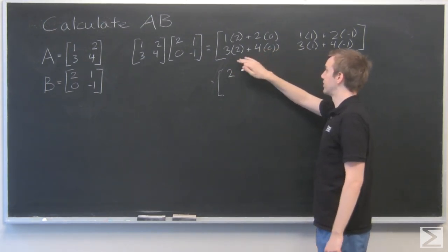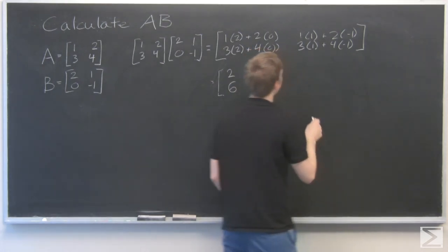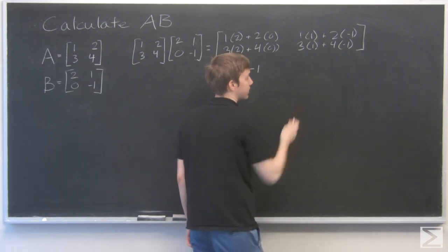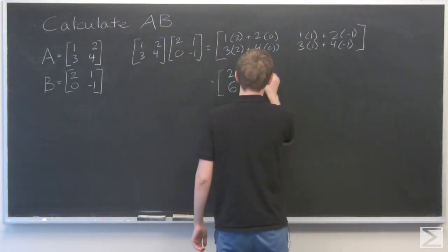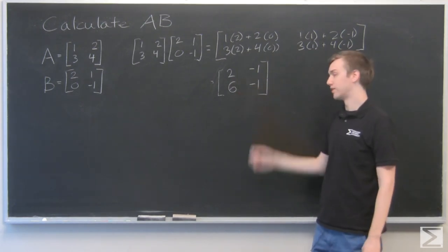3 times 2 plus 4 times 0, that's just 3 times 2 is 6. And 3 times 1 plus 4 times minus 1, that's 3 minus 4, that's negative 1. So our solution matrix is [2, -1; 6, -1].